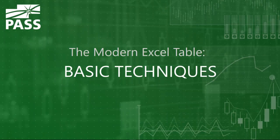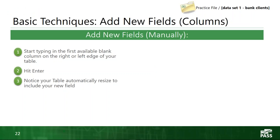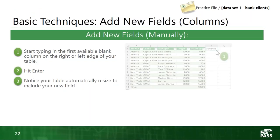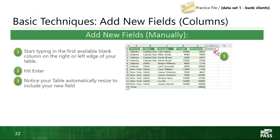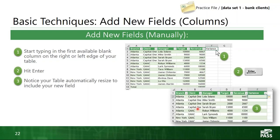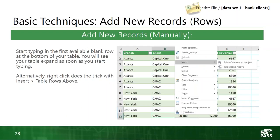Before we get into the advanced stuff, let's cover some basic techniques for working with modern Excel tables. If I need to add a new field manually, I simply go to the first available blank column at the right edge of my table, type the word 'variance,' tap Enter, and it just expands automatically — you'll see the formatting expand as you hit Enter. The same concept applies for adding new rows: find the first available blank row at the bottom of your table and just start typing, and the formatting automatically expands.